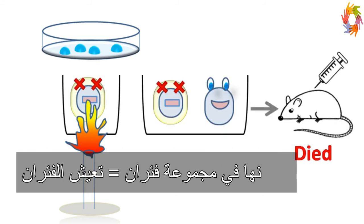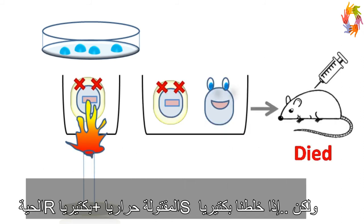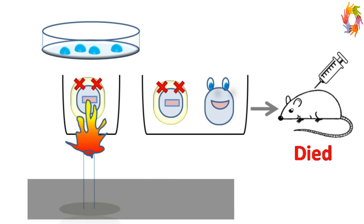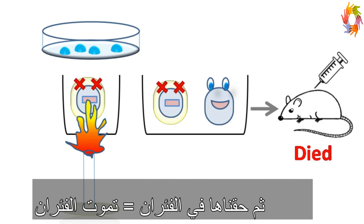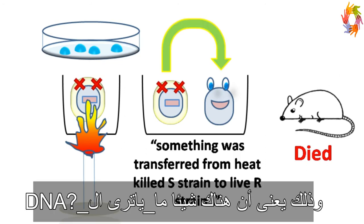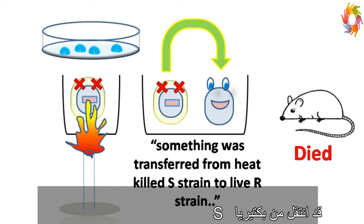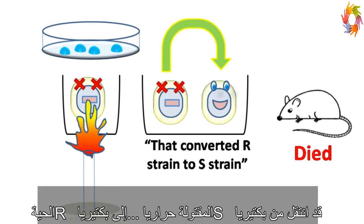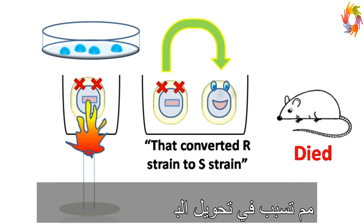However, when the cells of the heat-killed smooth strain are mixed with the rough strain and injected in mice, the mice are killed. And this result was surprising. This means something was getting transferred from the heat-killed S strain to the live R strain, which converted the live R strain to S strain, which was highly pathogenic.